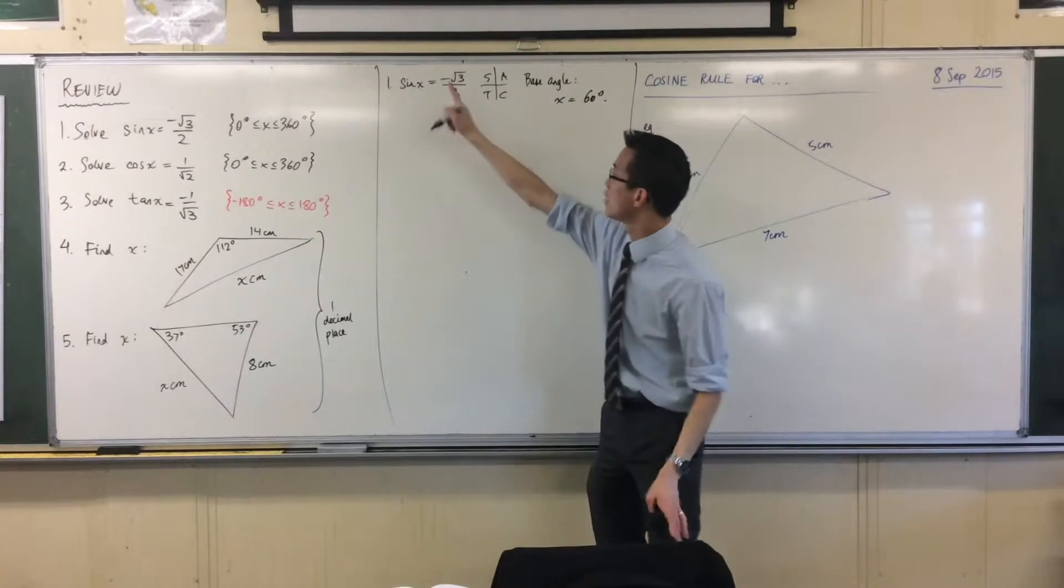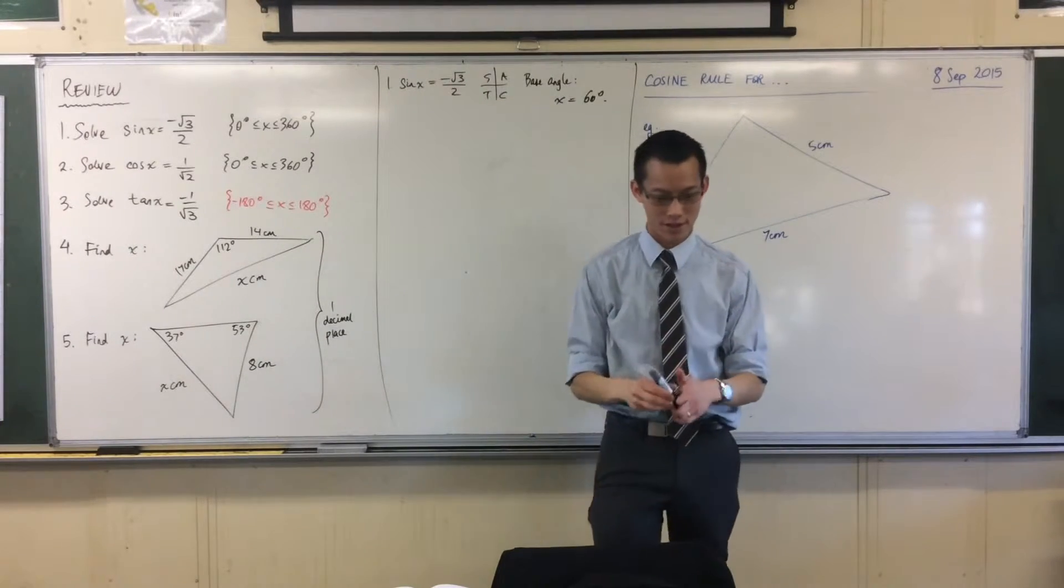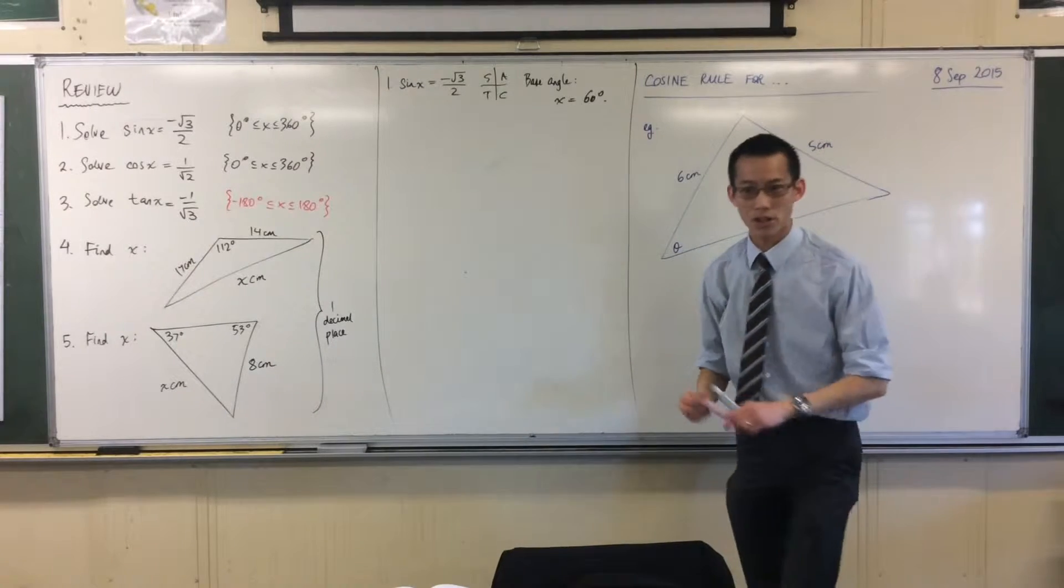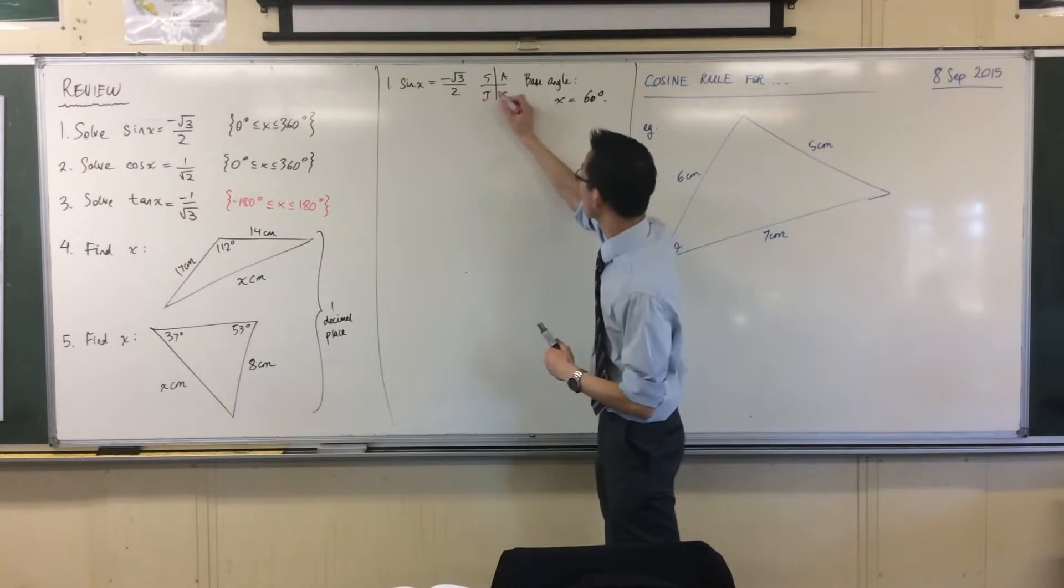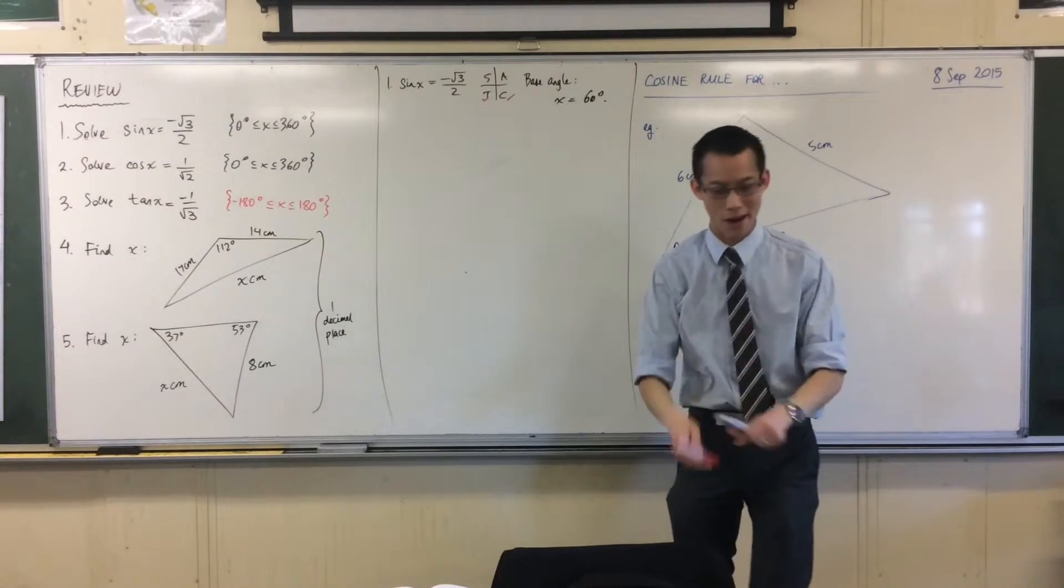Then I say sine is negative, so which quadrants am I interested in? Quadrants 1, 2, 3, 4. I want 3 and 4, don't I? You can see there where sine is negative.